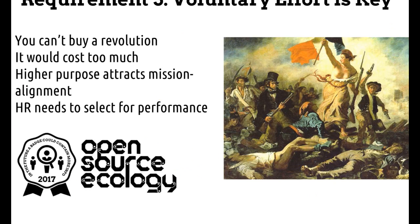We think the voluntary effort is key because you cannot buy a revolution — it would cost too much. The higher purpose attracts mission alignment, and then we just need to select for performance with our human resources team. Many people have higher purpose, but a lot of them might not necessarily have the skill set. We want people with both the skill set and the mission alignment to make things happen.